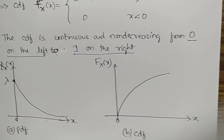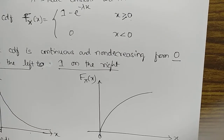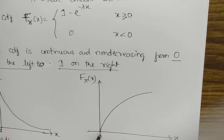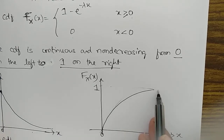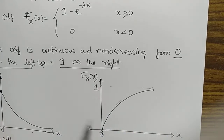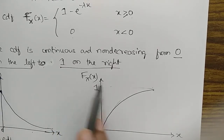Figure (b) shows the cumulative distribution function. As x increases, the CDF graph is continuous and non-decreasing, rising from 0 on the left to 1 on the right. The maximum amplitude the CDF can reach is 1.